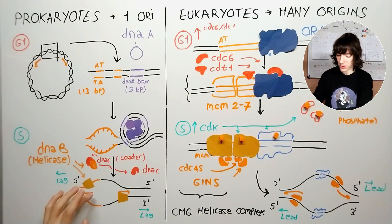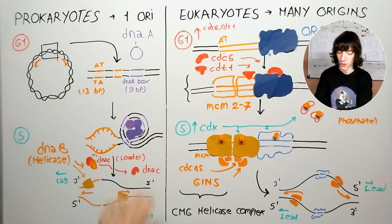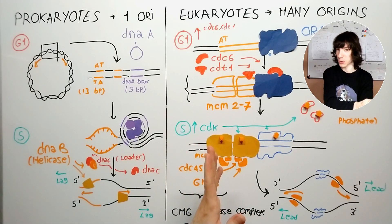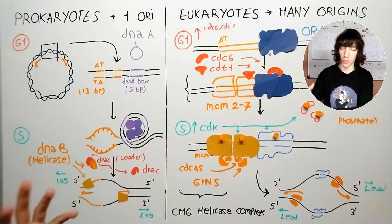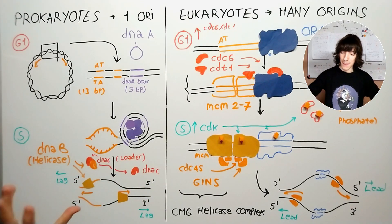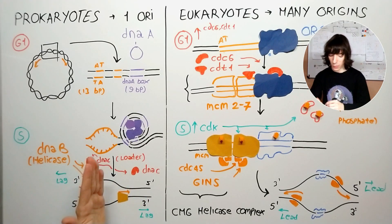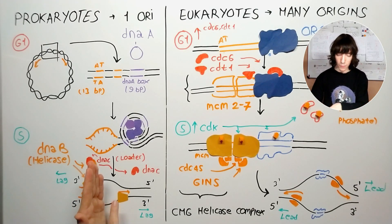DnaB cannot really bind to the DNA alone — it needs another protein, DnaC, which is the helicase loader. DnaC helps DnaB get into the DNA, and then it is released and goes away. I love the names here: DnaA, DnaB, DnaC — it's all very intuitive. A minor detail is that DnaB helicases move through the lagging strand. Imagine this is the replication bubble — it will have two replication forks, one corresponding to each of the DnaB helicases that have been loaded.